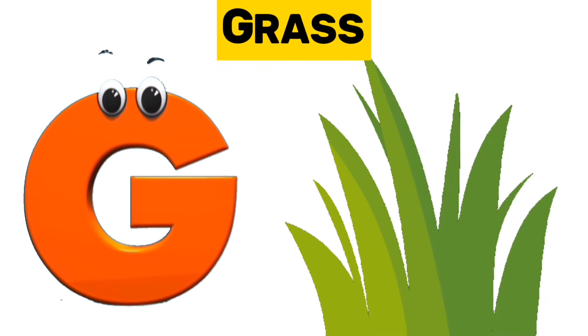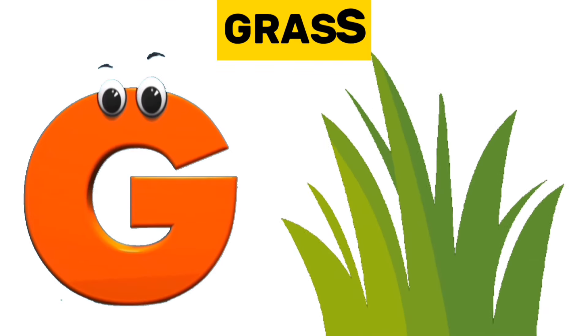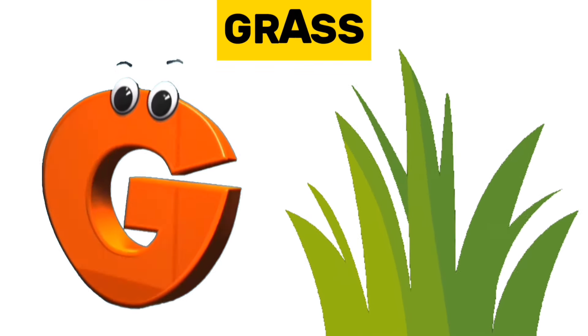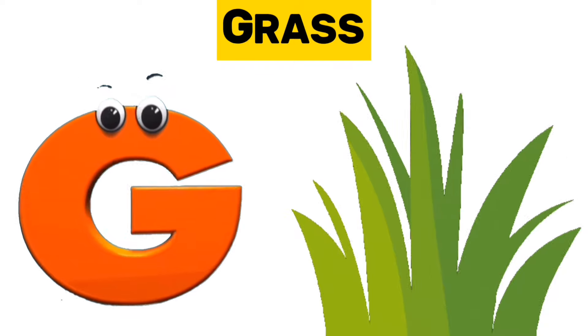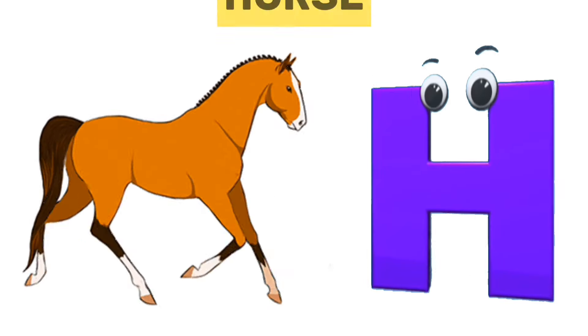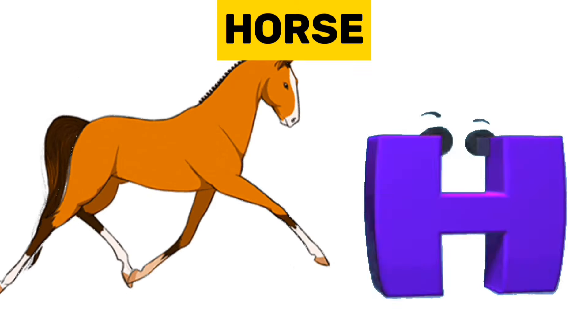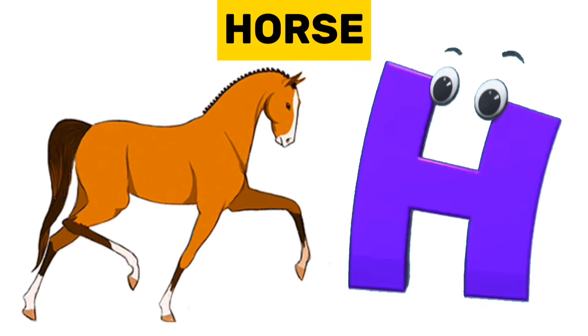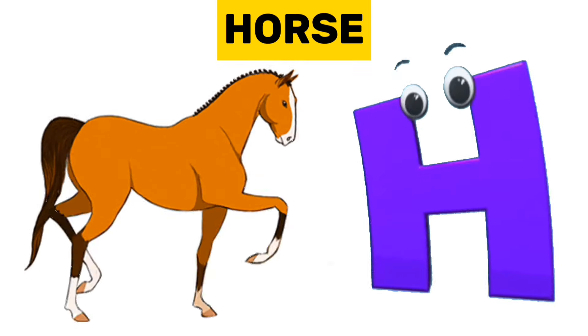G is for grass. G, g, grass. H is for horse. H, h, horse.